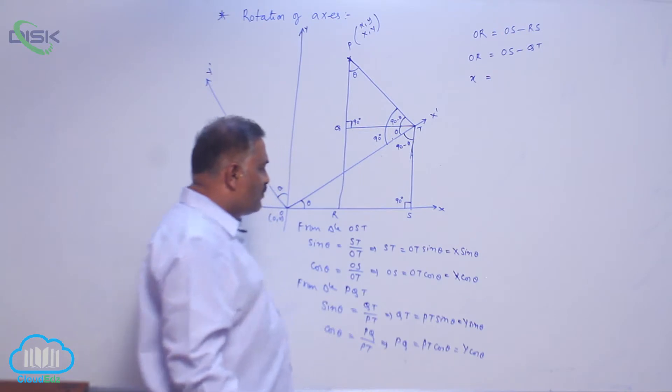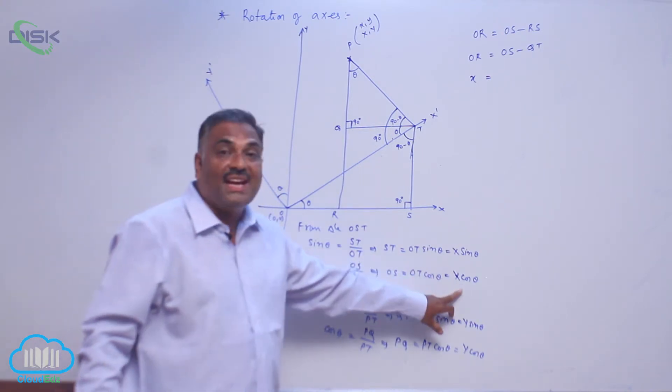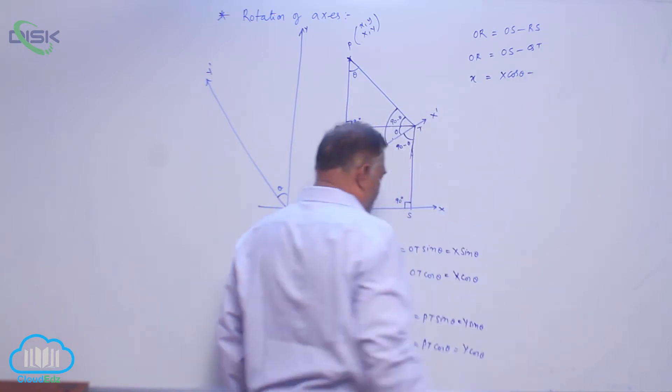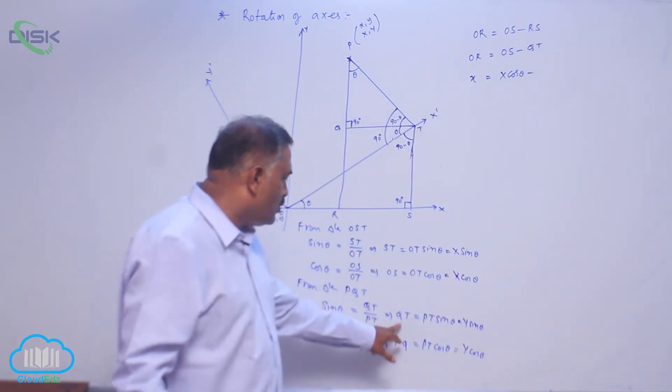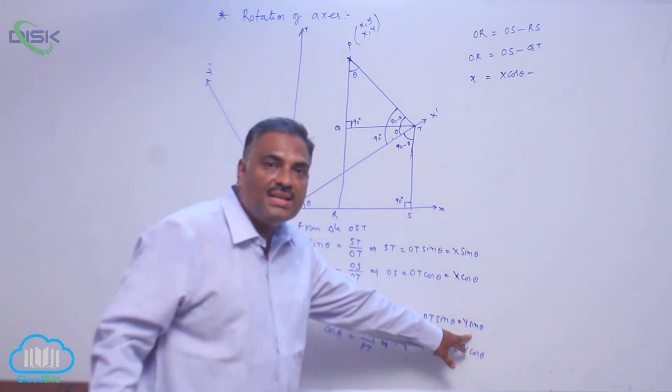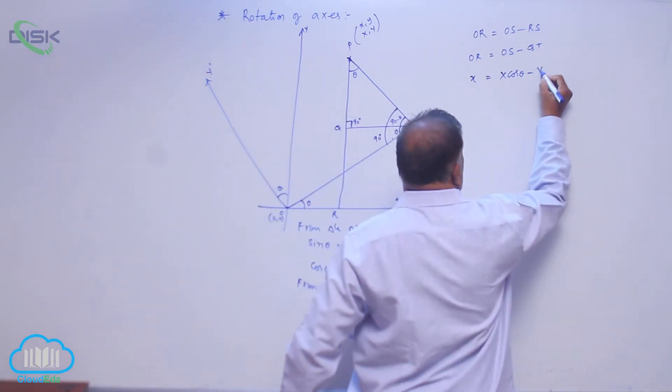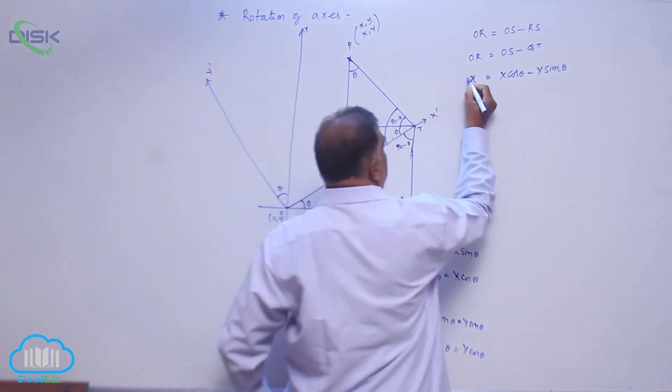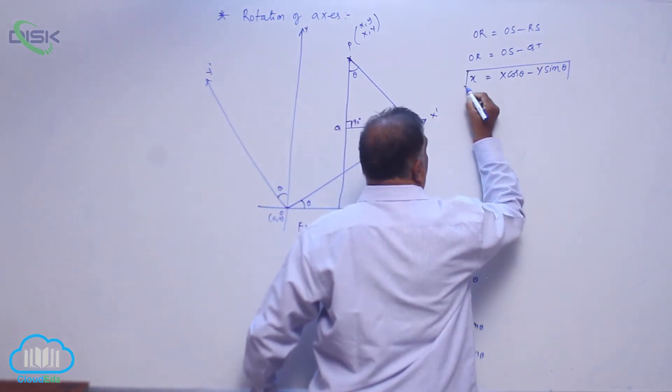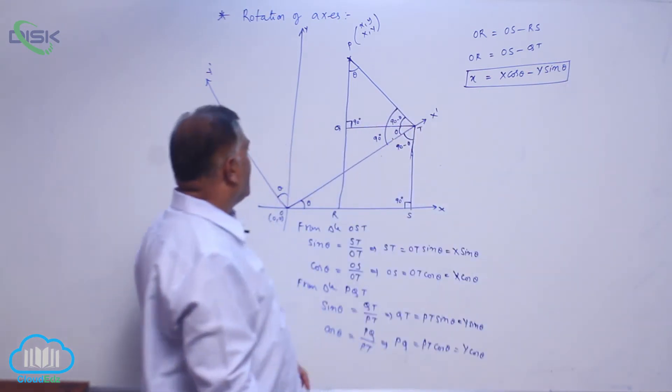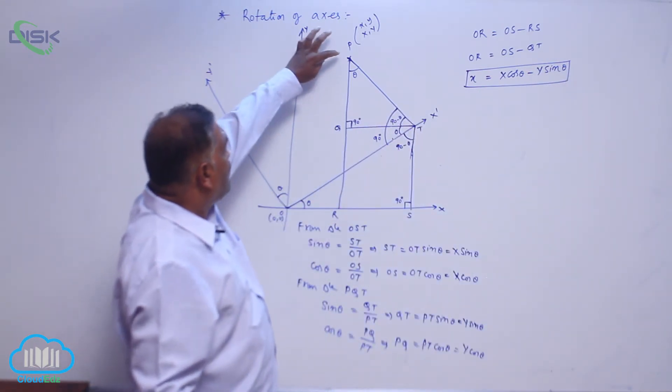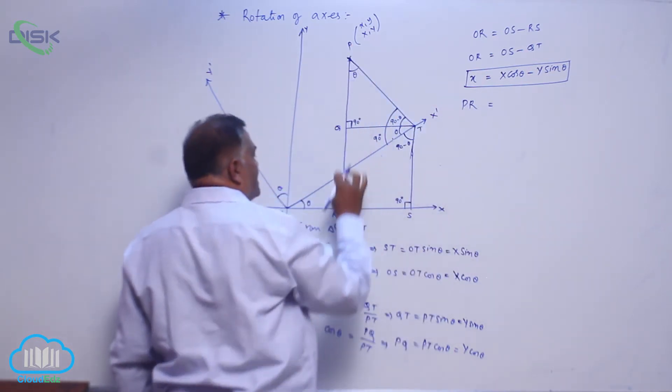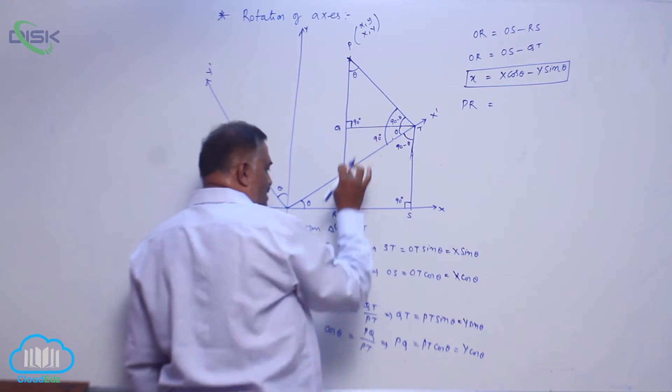Already again, this is the first equation. Now let us come to the next point, PR. Let us write PR first. PR is nothing but PQ plus QR.